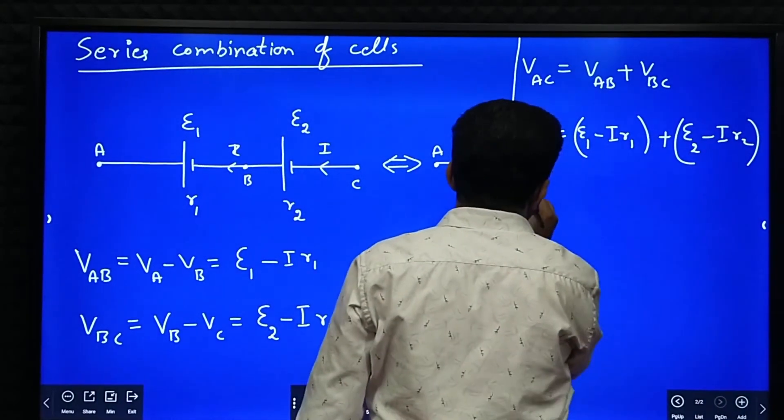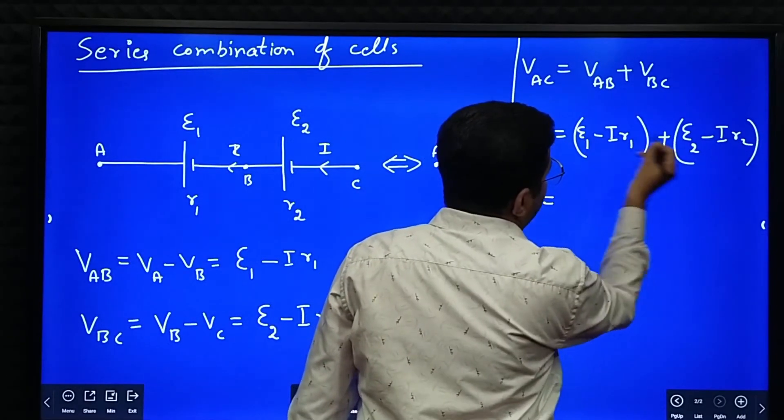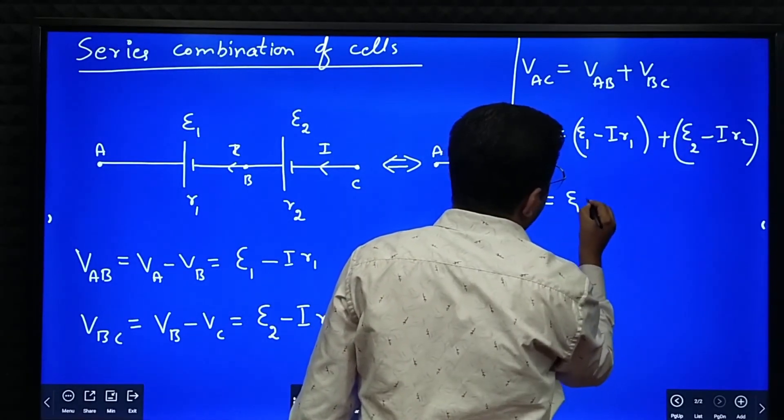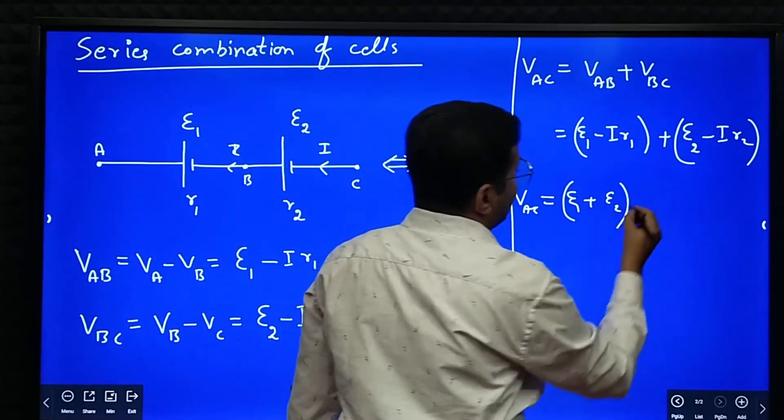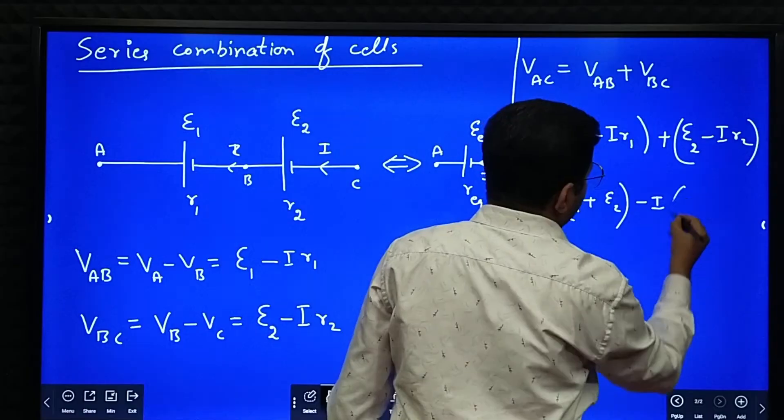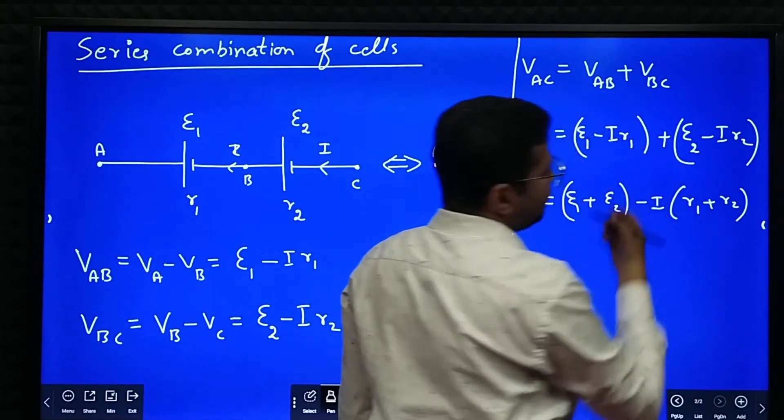Now what happens? VAC is equal to E1 plus E2 minus I into R1 plus R2. So what I have taken? I have taken minus I common.